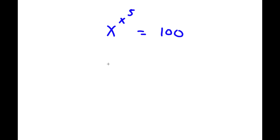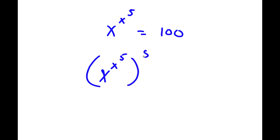The first thing I'm going to do is take the power of 5 on both sides. So now I have x to the power of x to the power of 5, all to the power of 5, is equal to 100 to the power of 5.